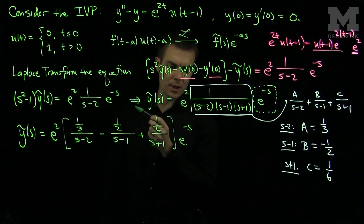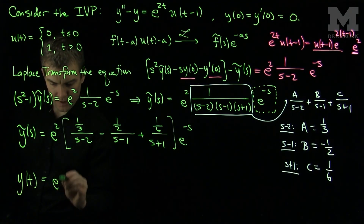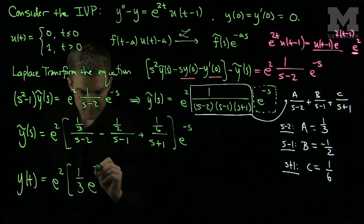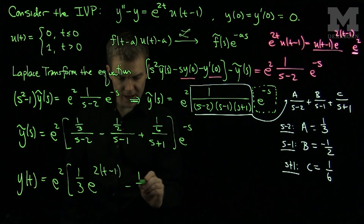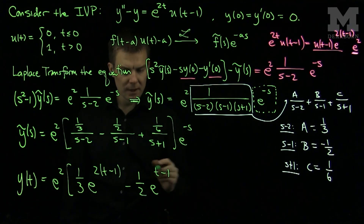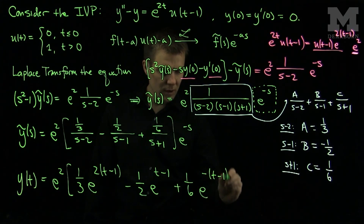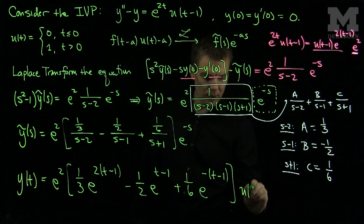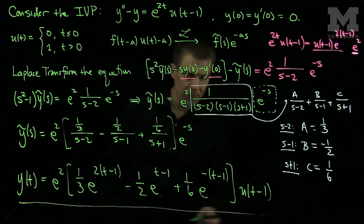The e to the negative s shifts the Laplace transform by 1 unit. Taking the inverse Laplace transform, y of t equals e squared times the quantity: 1 third e to the 2(t minus 1), minus 1 half e to the (t minus 1), plus 1 sixth e to the negative (t minus 1), all multiplied by the Heaviside function u of t minus 1. This is the solution to our initial value problem with the piecewise forcing function.